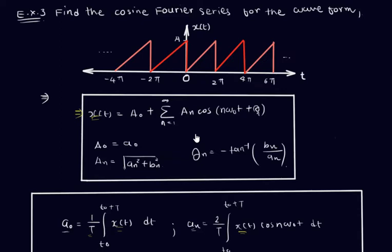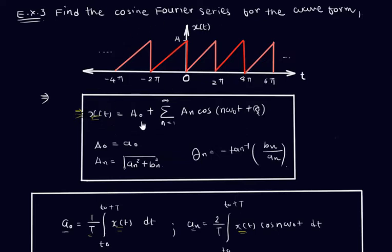To find the cosine Fourier series, we consider the function: x(t) = A0 + Σ (n=1 to ∞) An cos(n·ω0·t + θn). This is the waveform for which we are calculating the cosine Fourier series. We need to find a total of 3 to 4 terms.